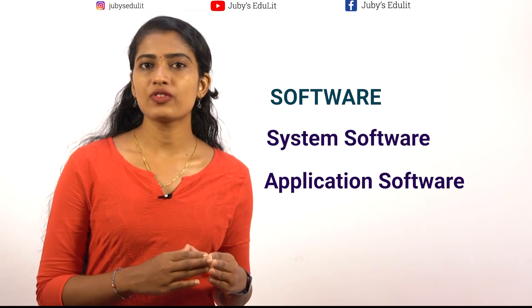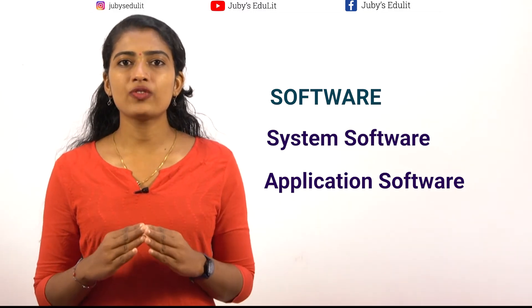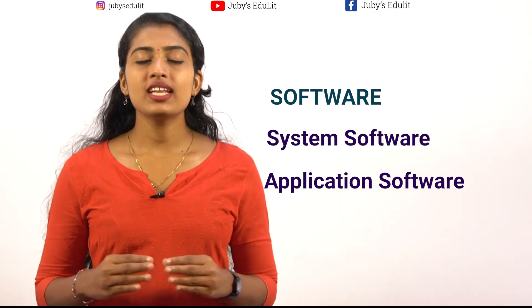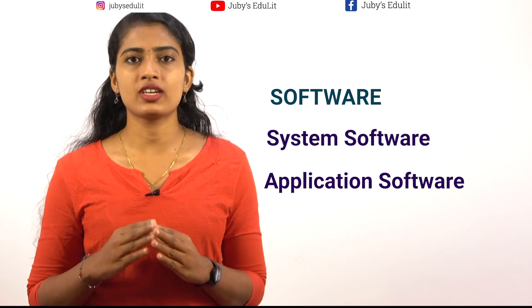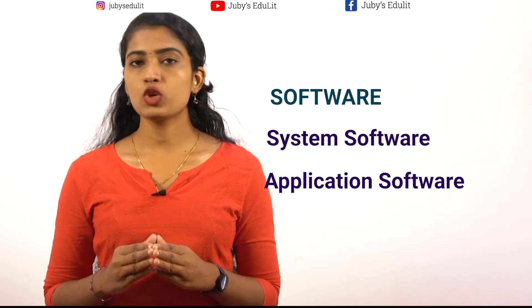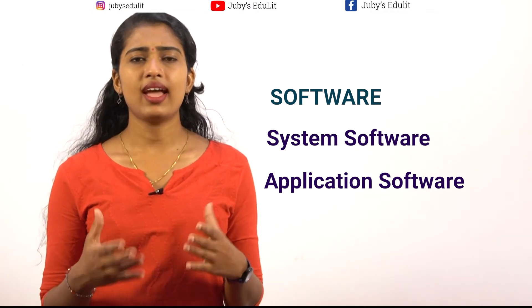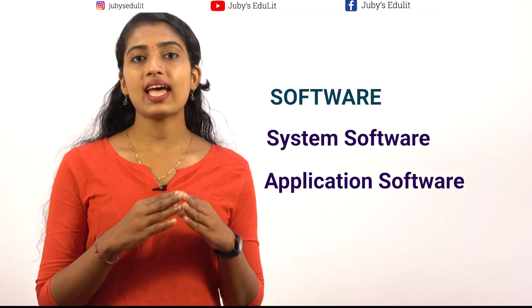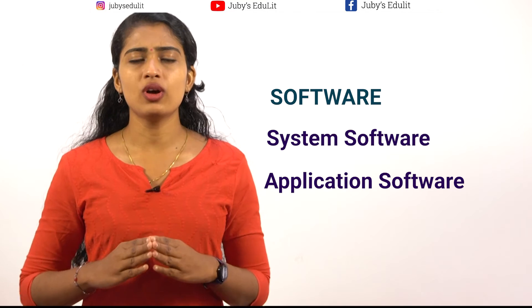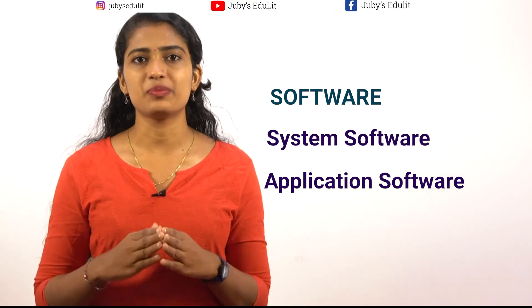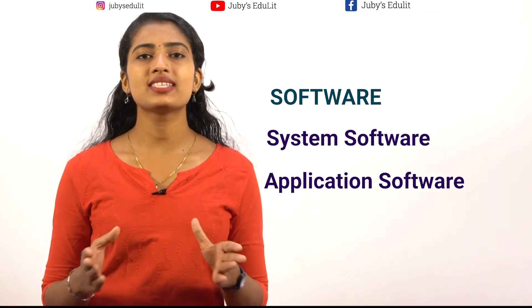Now coming to software in detail: a software is a program containing a set of instructions needed to perform certain actions on a computer. There are two types of software: system software and application software. System software is the software that controls and coordinates the functions of every part of a computer. Linux, Microsoft Windows, and Android are examples of system software. Whereas application software helps to perform a particular function like editing a video, photo, presenting a document or presentation, etc. Microsoft Excel, spreadsheet, and Adobe Photoshop are examples of application software.